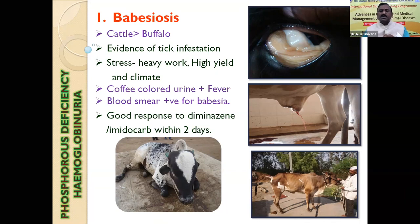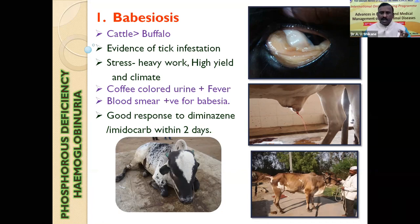For babesiosis, history of tick infestation is important, but we have recorded several cases of babesiosis even without tick infestation. Factors that play a role in babesiosis include heavy work load. Another important point: babesiosis can occur in non-seasonal periods, whereas PPH is a disease of the main lactation zone. So if there is red urine in a non-seasonal period, it is more likely to be babesiosis.